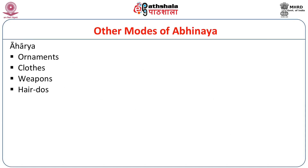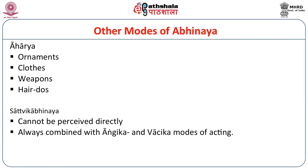In Aharya, various ornaments, clothes, weapons and hairdos are described. In fact there is a code — for example, if somebody has a black Angavastra, he should be recognized as Balarama. You also know that anybody with a blue body color is Rama or Krishna. There are certain agreed notations or conventions about who wears what. Satvika Abhinaya cannot be perceived directly — the actor is feeling like the character, so it is always combined with Angika and Vachika modes of acting. The greatest Satvika Abhinaya is when people can have tears without using glycerin, when people can have sweat in a cold place — that is when Satvika Abhinaya is best.